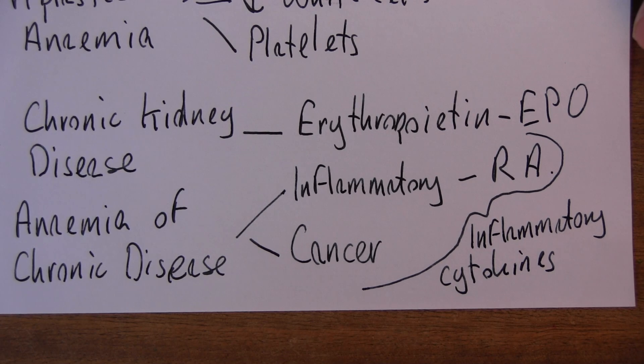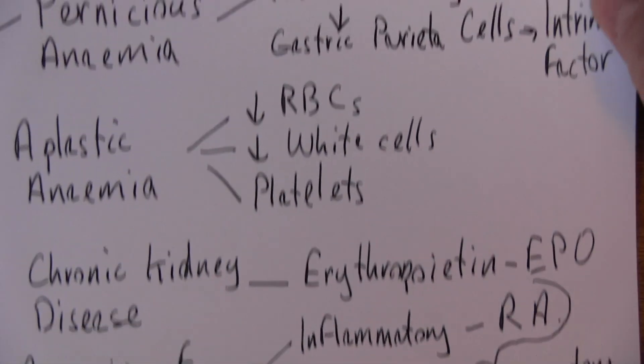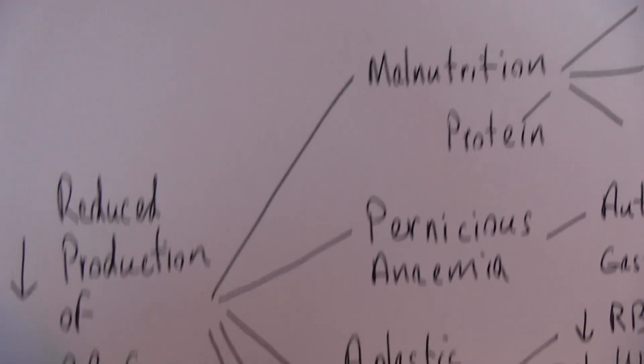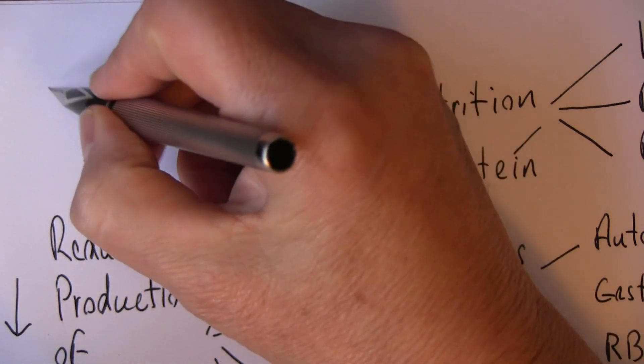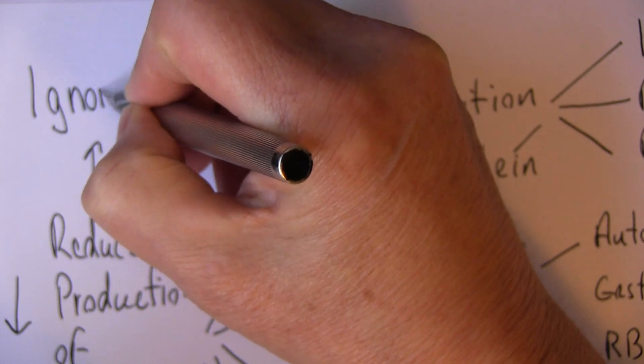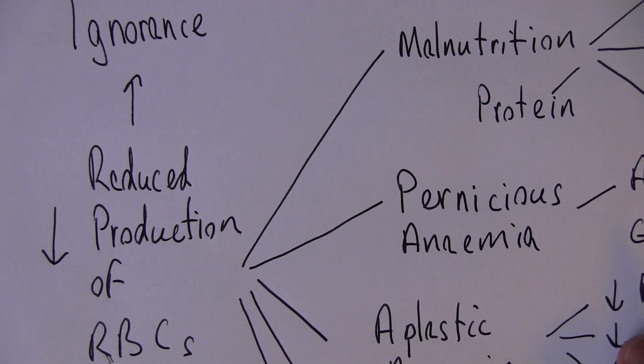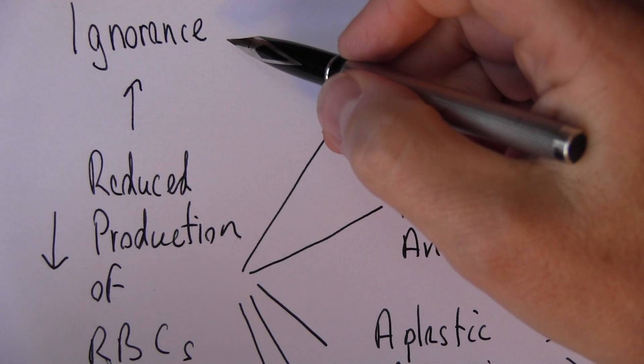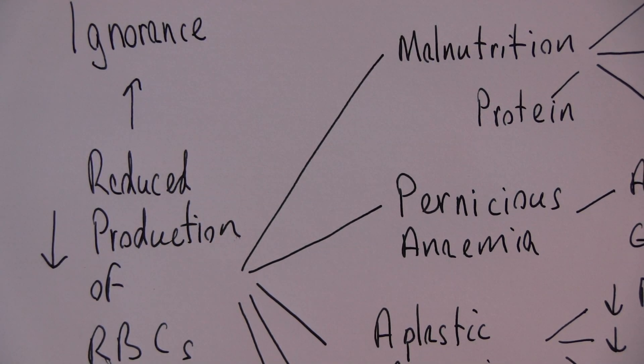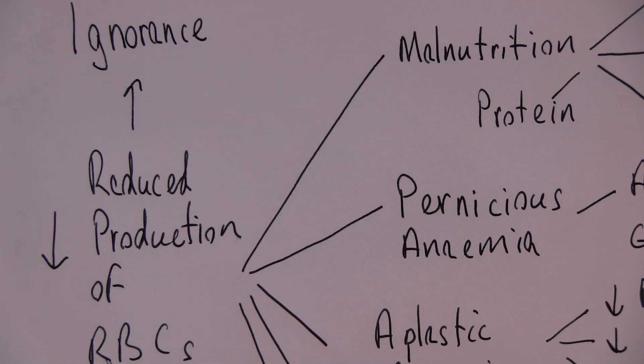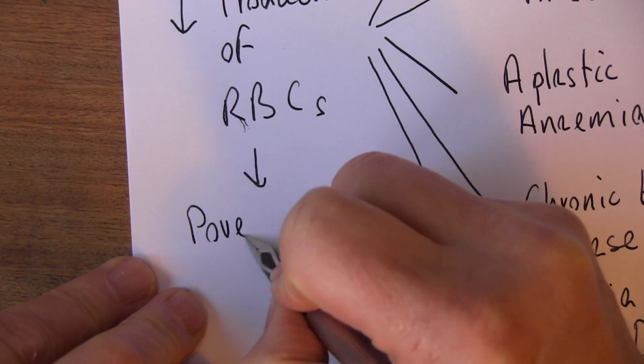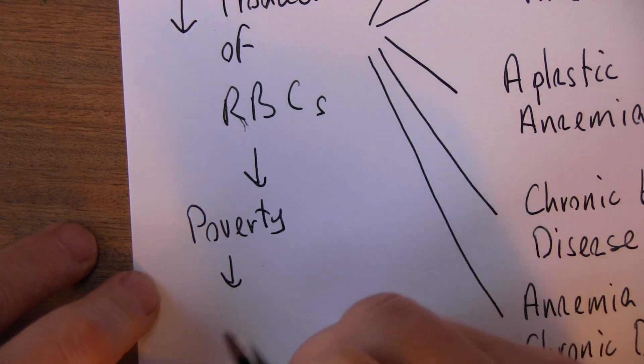It's worth thinking about why we have such a problem with anemia, particularly the simple deficiency anemias. One reason is people simply don't know what we've just talked about on this video. It's our role to tell people that they need the iron, the B12, and the folic acid. This can be related to poverty and lack of services.